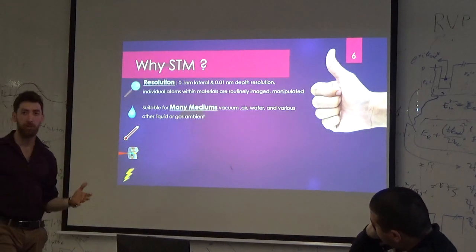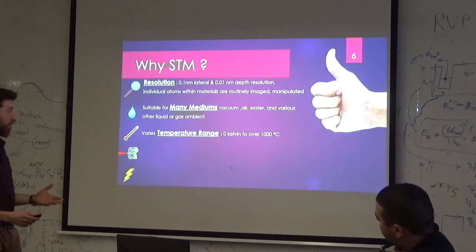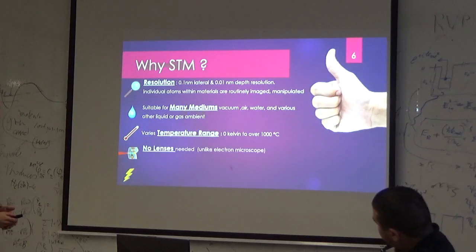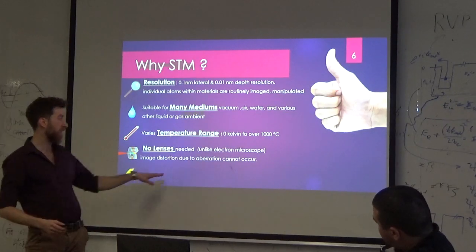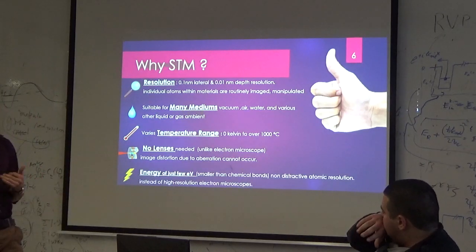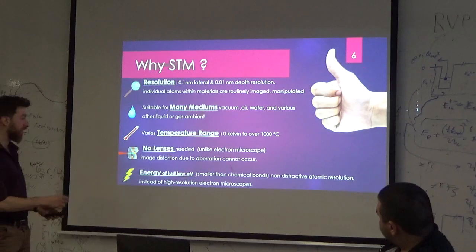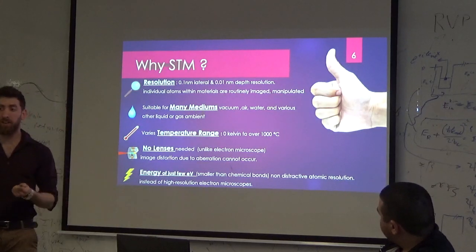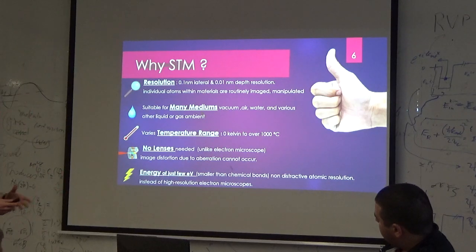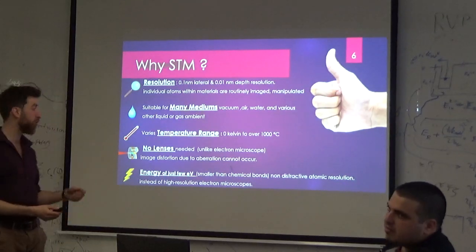The second advantage is that we can work in many different mediums: under vacuum, under air, water, and many different gases and liquids. The third thing is the temperature range — we can work from zero Kelvin up to over thousands of Celsius. There are no lenses involved, so we have no aberration whatsoever. And what I think is the most interesting advantage is the energy — we use just a few electron volts to operate this device and measure the current, making it non-destructive for your sample. Compare this to the transmission electron microscope, which uses kilo or even mega electron volts.